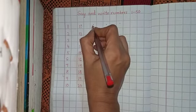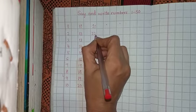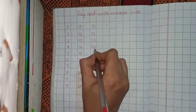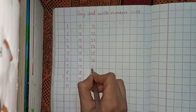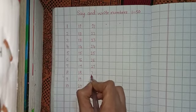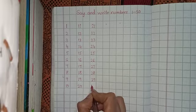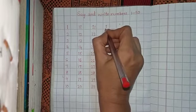Next number is 21, 22, 23, 24, 25, 26, 27, 28, 29, 30.